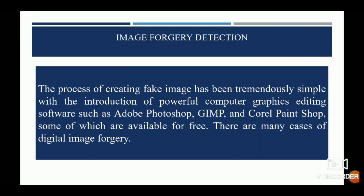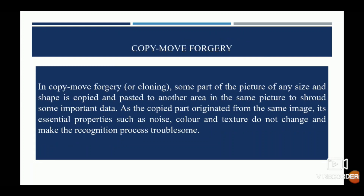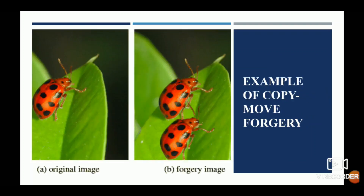There are many cases of digital image forgery. Copy-move forgery, as discussed, is copying a part of an image and pasting it onto the same image. Since the copied part originates from the same image, its essential properties such as noise, color, and texture do not change, and this creates detection challenges. This is an example showing how a part of an image is copied and pasted onto the same image.